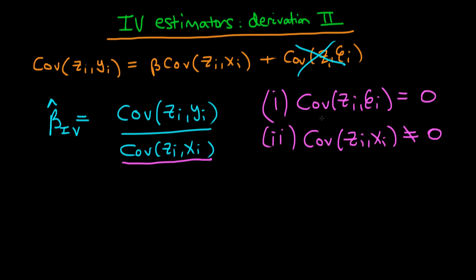The first condition has the intuition that our instrument has to affect Y only through X. And the second condition is just a relevancy condition — it says that our instrument has to affect X in some way, because if it doesn't affect X in some way, it's not really a relevant instrument at all. And hence, any estimators based around that instrument aren't going to be particularly sensical.